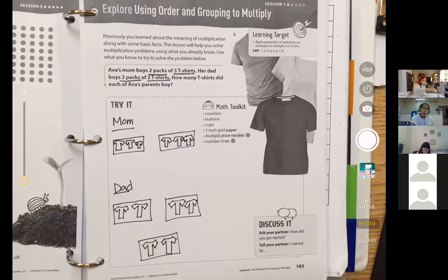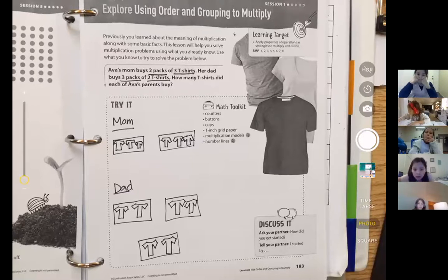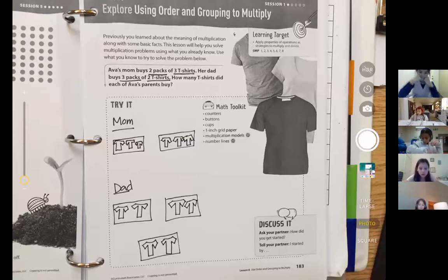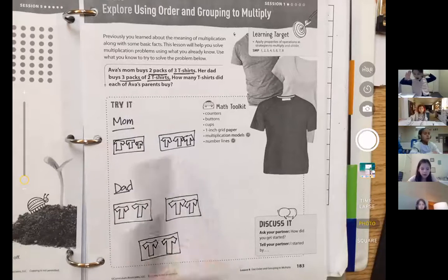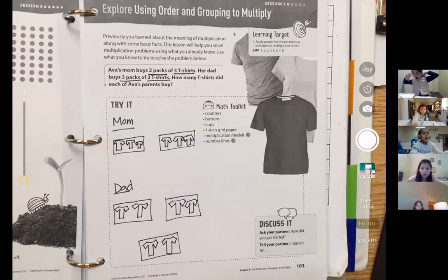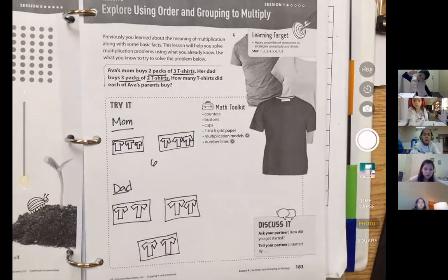So I'm going to spin again. I need to make everyone turn their cameras on. I'm going to have to do that. All right, let's see, Jasmine. Jasmine, how many shirts did Ava's mom buy? If you look here, how many shirts did she buy? Six. Good, six shirts, right? Thank you, Jasmine.